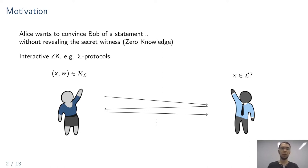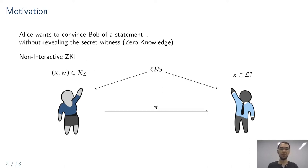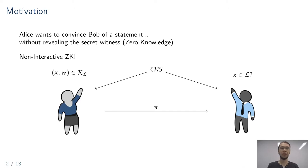In many cases we want non-interactive zero-knowledge protocols where Alice simply sends a single proof π and Bob is convinced even if he sees the proof later. The drawback is that these protocols don't exist in the plain model, so we require some trusted setup like a common reference string or the random oracle model, and they are often computationally more expensive than interactive protocols. But since interactive protocols can't be used in all applications—for example in voting—we often require non-interactive zero-knowledge, which is the focus of this paper.